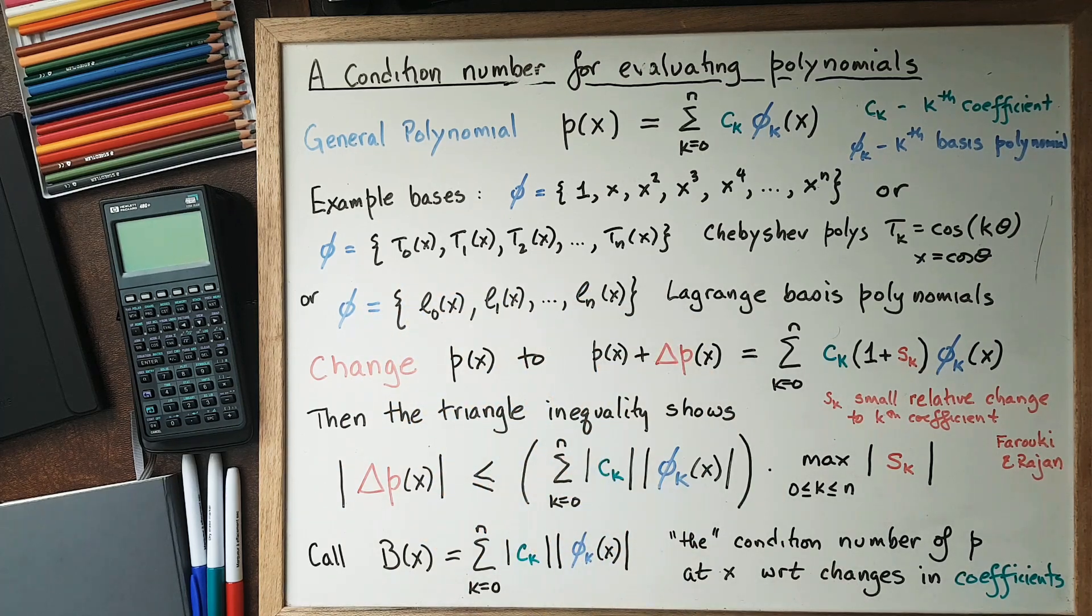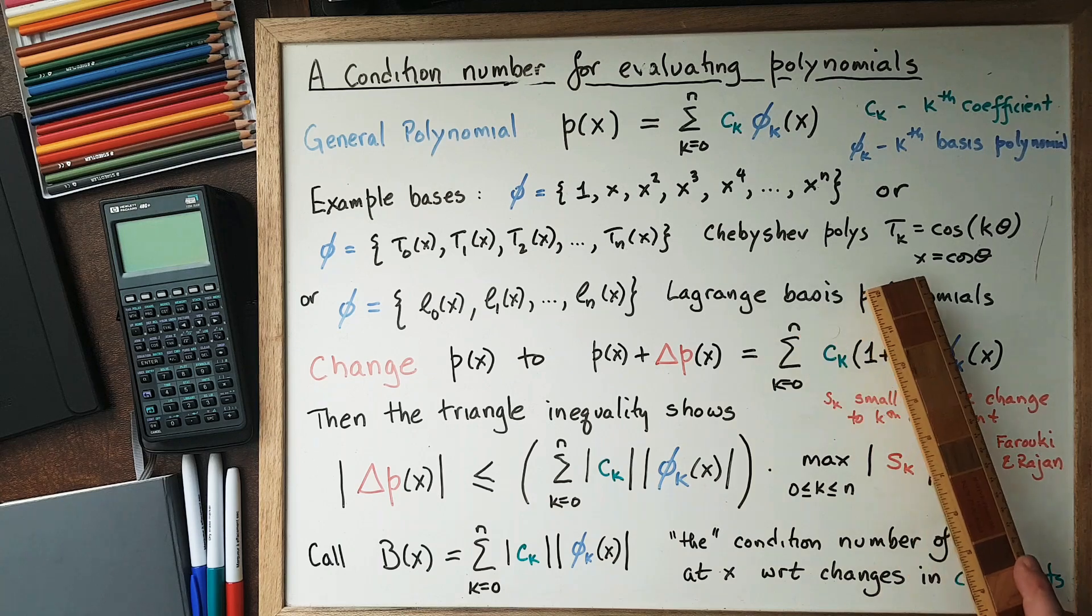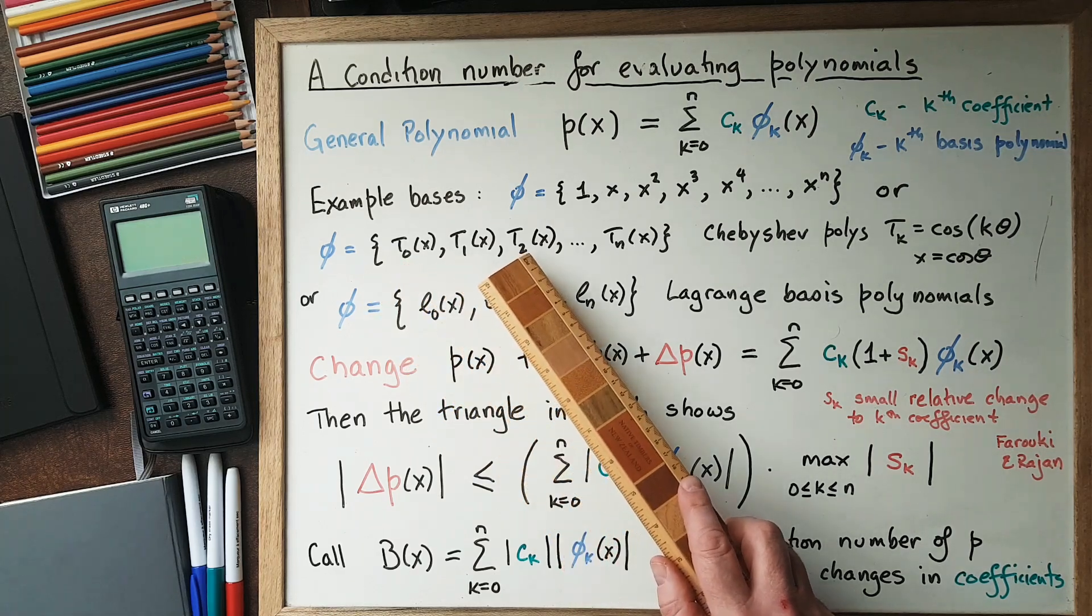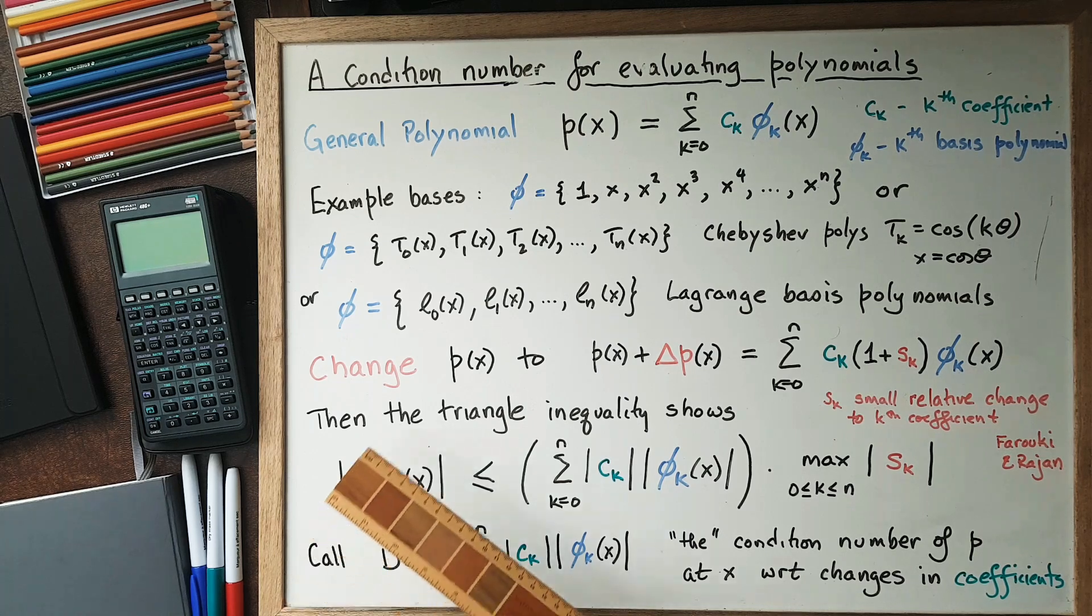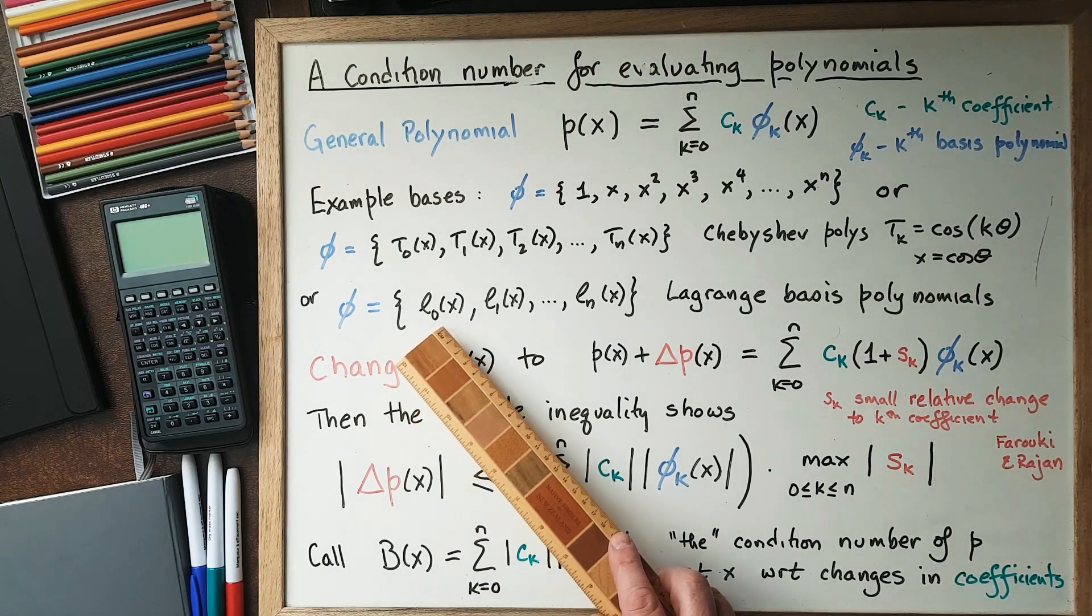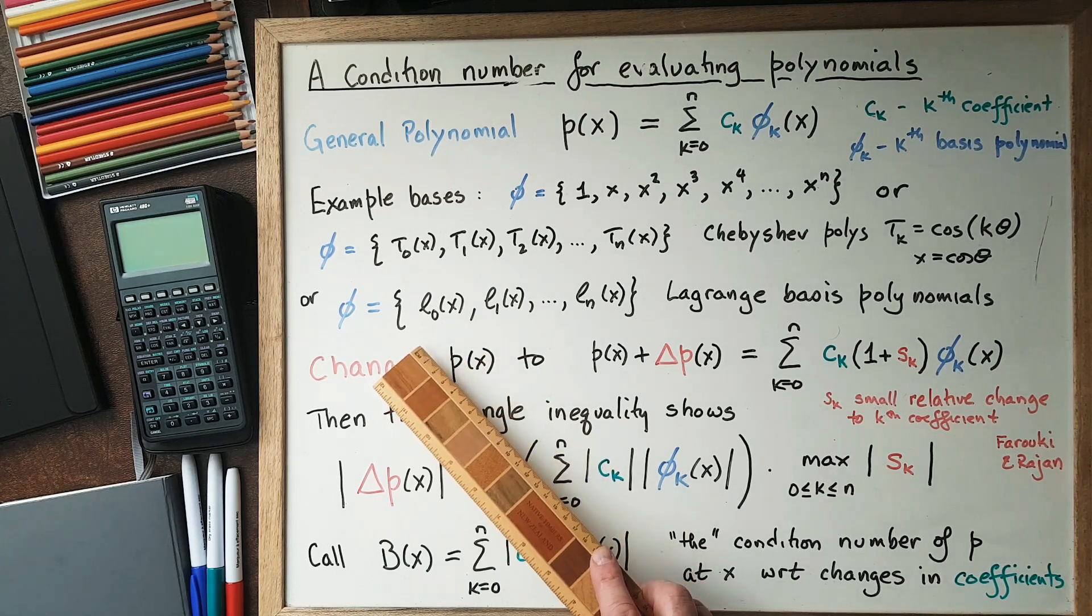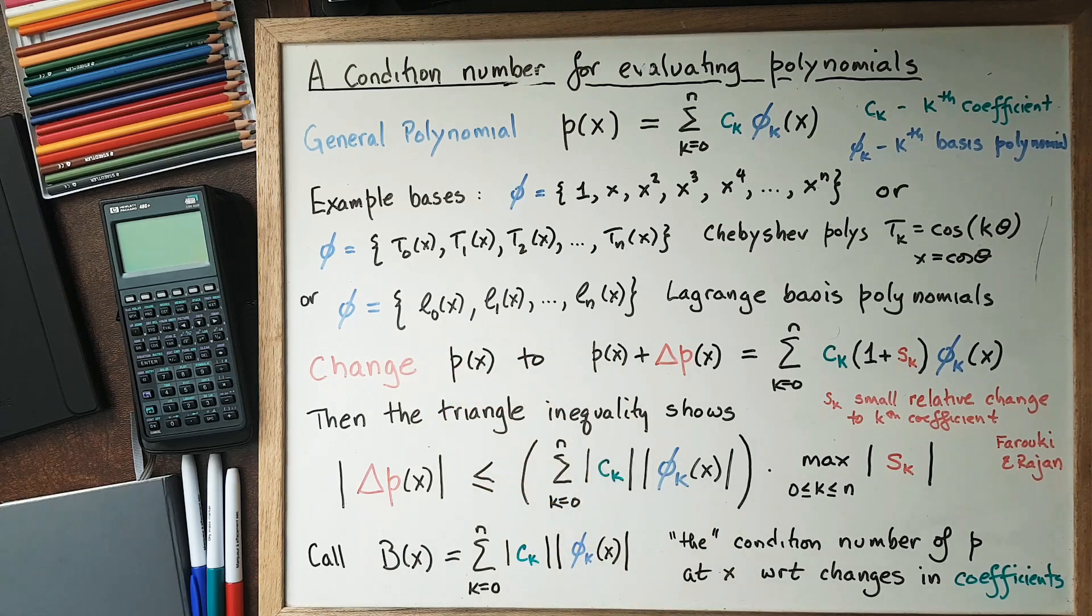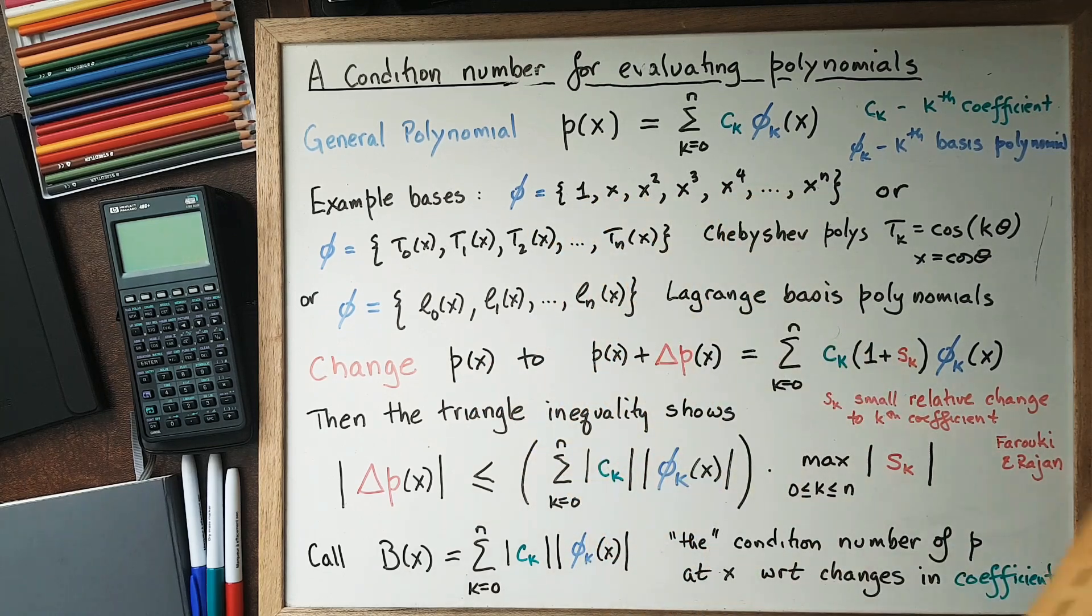Chebyshev polynomials are also a possibility, where T_k(x) is cosine of kθ, where θ is a function of x by x = cos θ. We've also seen the Lagrange basis polynomials. If we have a Lagrange basis on n+1 distinct nodes, then L_0(x) would be (x-τ_1)(x-τ_2)...(x-τ_n) divided by (τ_0-τ_1)(τ_0-τ_2), and so on. We might have our polynomial expressed as a linear combination of these or really anything.